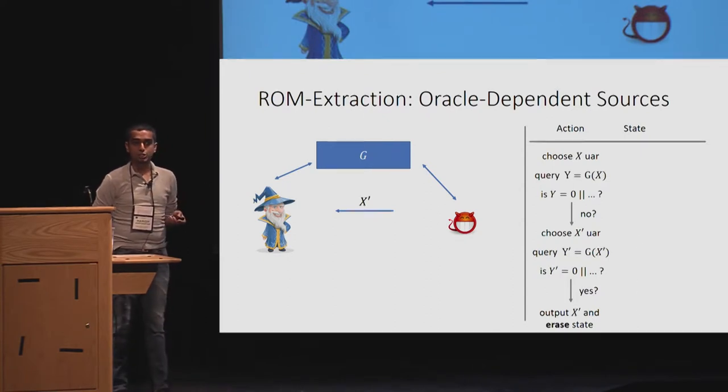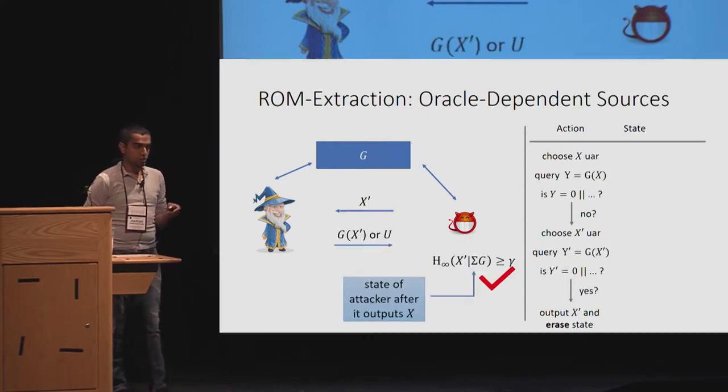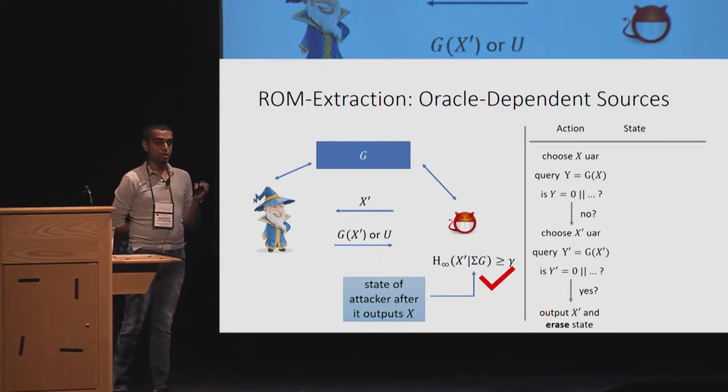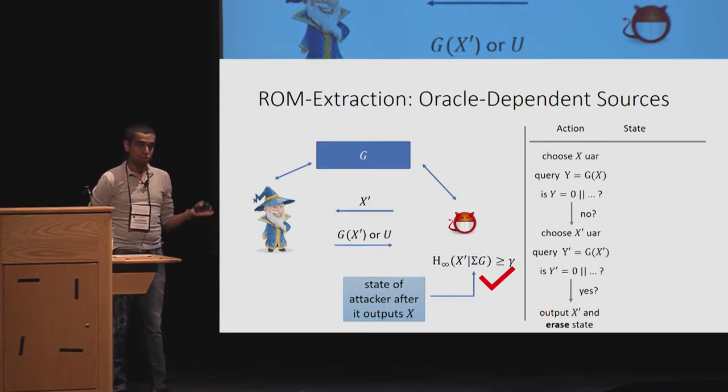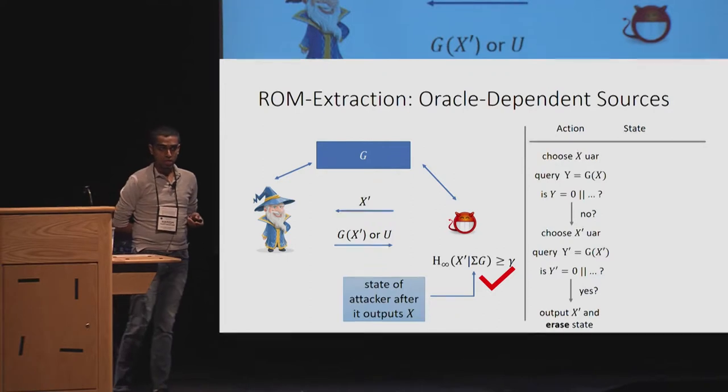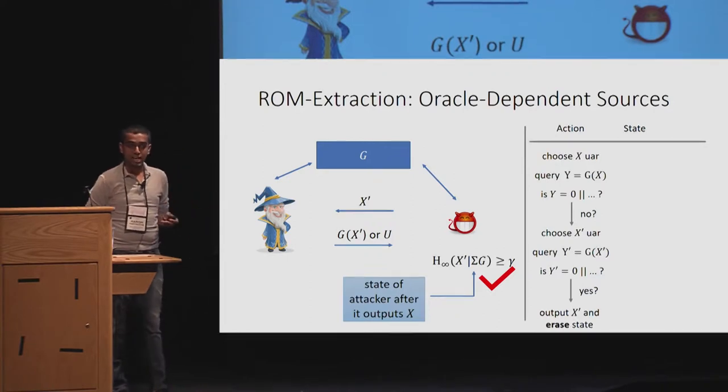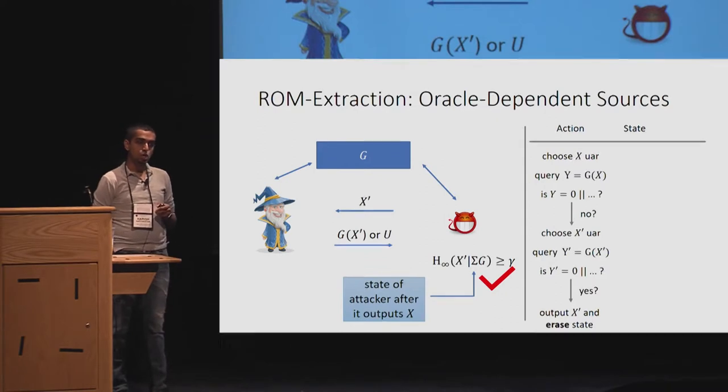Let's look at the conditioning that we had before, which is that now X prime condition on sigma, which is empty, and G, it still has entropy. Clearly, this is not a good attack because the output has minimum entropy. So, that brings us to the big question.